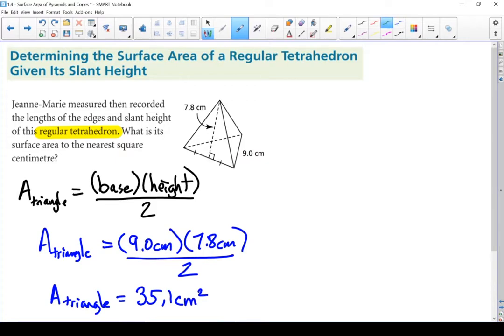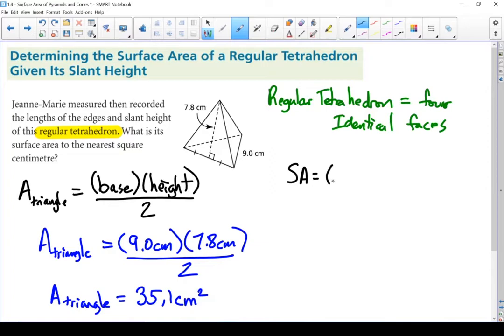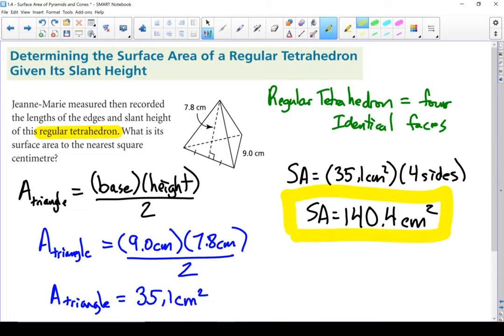It's a tetrahedron, so all the faces are the same. My total surface area should be that 35.1 times 4. Total surface area is 140.4 centimeters squared. That is the surface area of a regular tetrahedron.